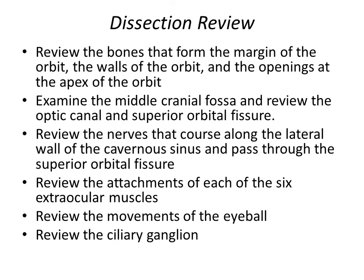Here is the dissection review as per the dissector. It starts off with the review of the bones that form the margin of the orbit and the walls of the orbit, and all the openings at the apex of the orbit. Go and re-examine the middle cranial fossa and review the optic canal and the superior orbital fissure. Review all of the nerves coursing through the lateral wall of the cavernous sinus that pass through the superior orbital fissure. Review the attachments of the six extraocular muscles, and remember the common attachment site for the rectus muscles at the common tendinous ring. Also review the movements of the eyeball, especially in regard to differences if you're looking from the primary position or from an abducted or adducted position. And review the ciliary ganglion — its location and its functions.